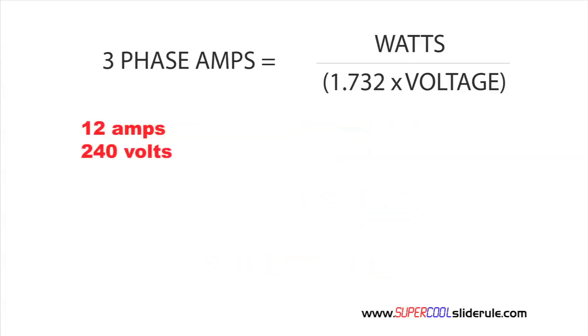So, our known value is 12 amps. So, 12 amps are going to be equal to watts, which is what we do not know. Now, do not forget to do everything in parentheses first.